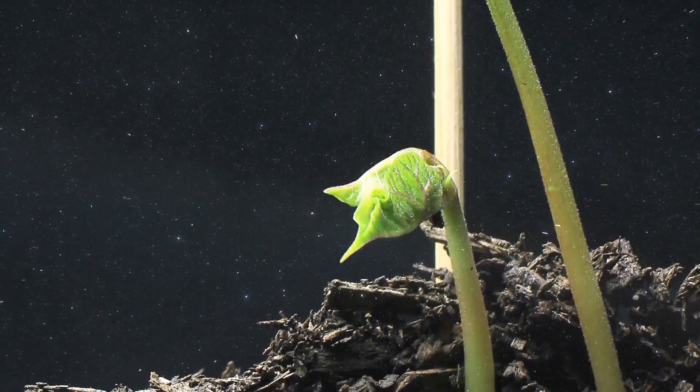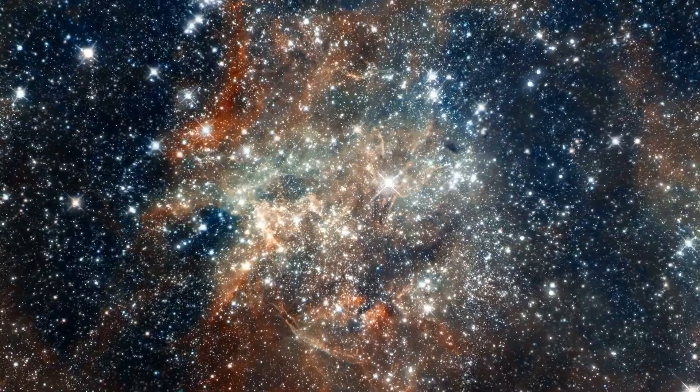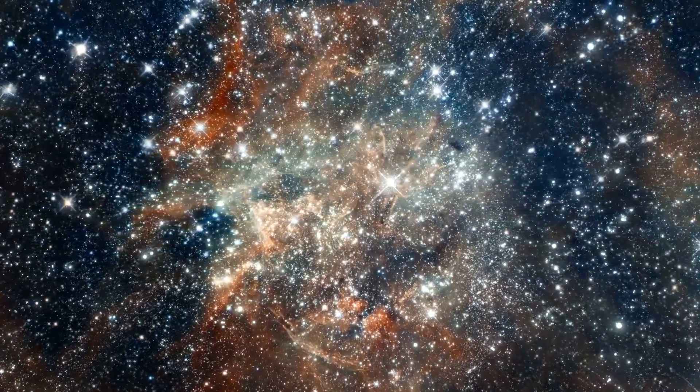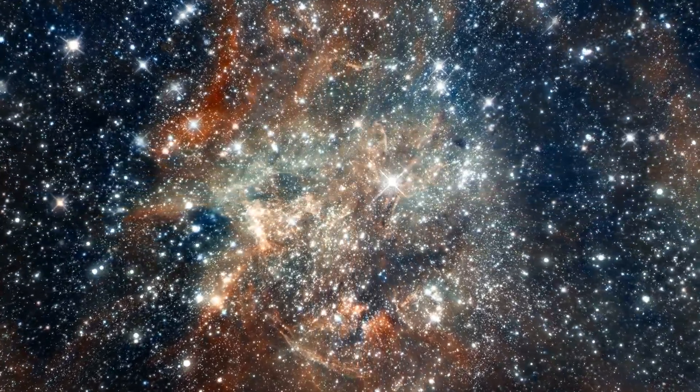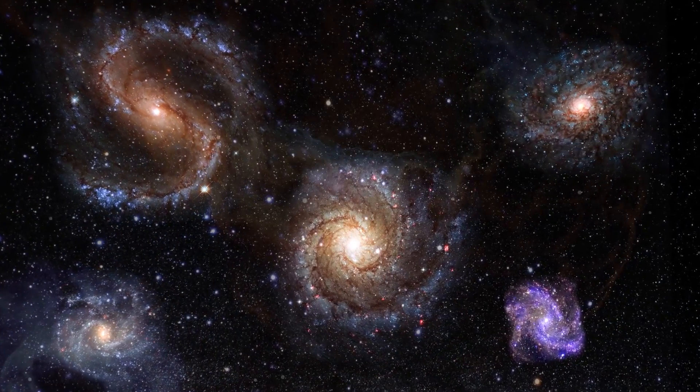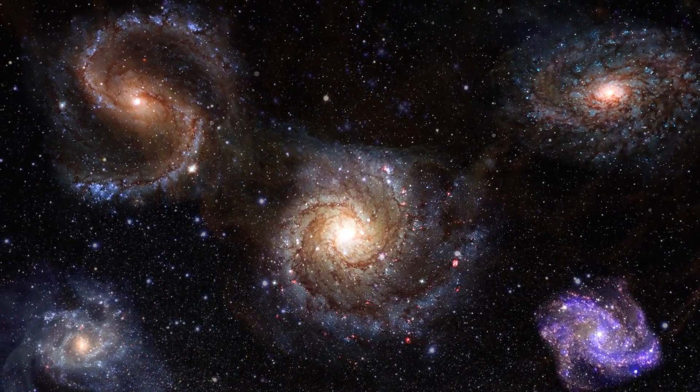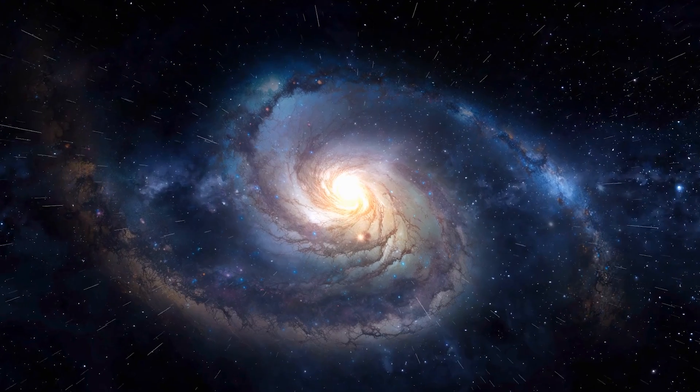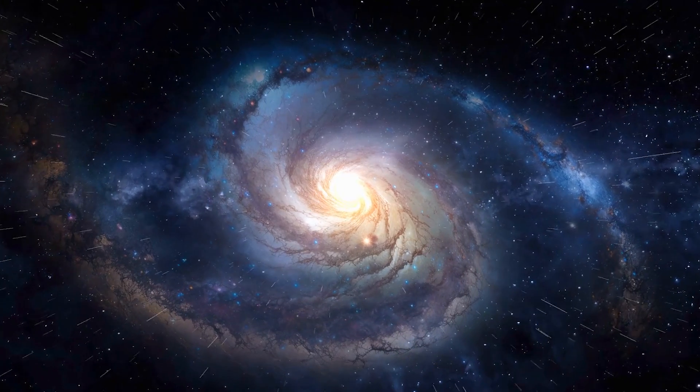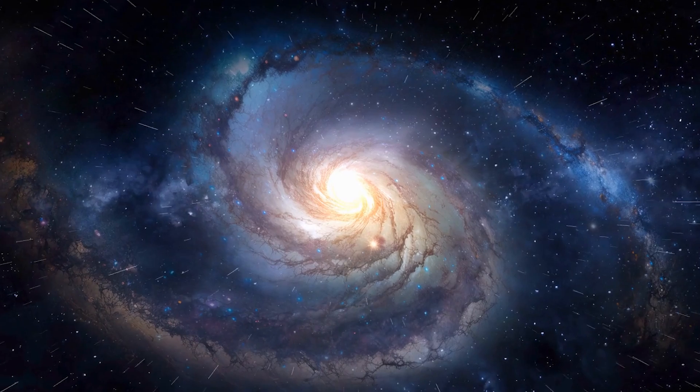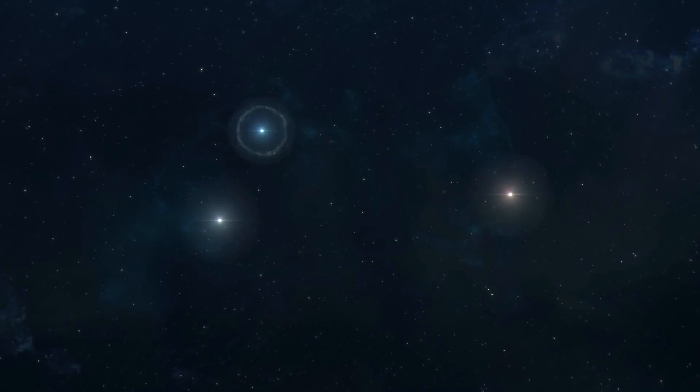But here's the twist. These early galaxies aren't the simple, messy blobs of stars scientists expected. James Webb's observations show they already had complex structures like swirling disks and central bulges, which usually form much later. This unexpected maturity is forcing scientists to rethink everything they thought they knew about the young universe. It suggests that star formation and galaxy growth happened way faster than previously imagined. Imagine the universe going from zero to 60 in the blink of an astronomical eye.